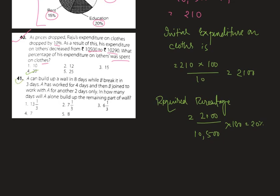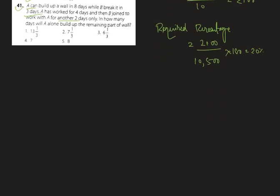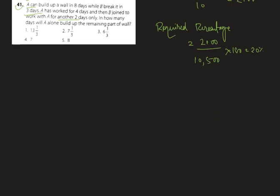Question 41: A can build up a wall in 8 days while B breaks it in 3 days. A has worked for 4 days and then B joined to work with A for another 2 days only. In how many days will A alone build up the remaining part of the wall? This is a completely new question.